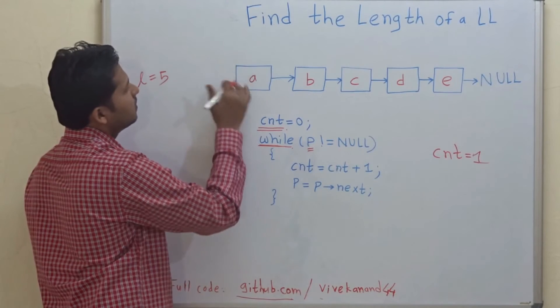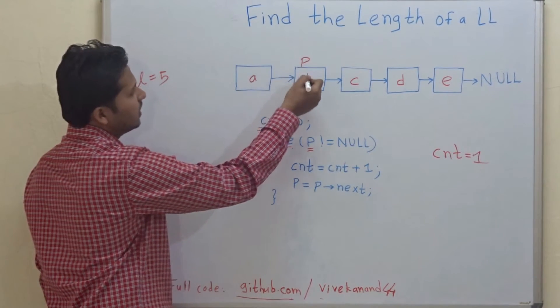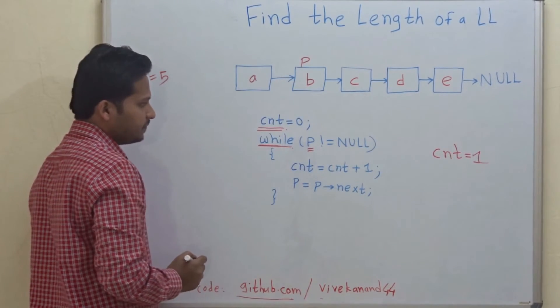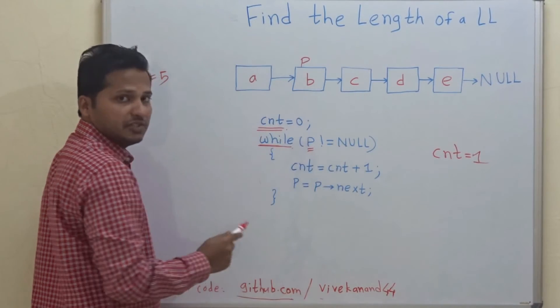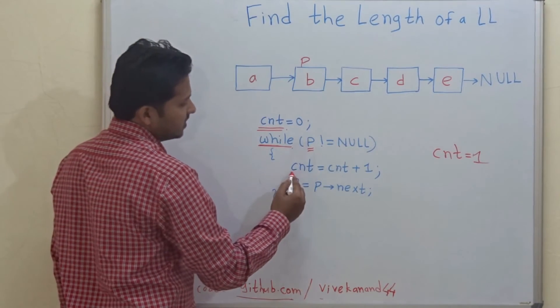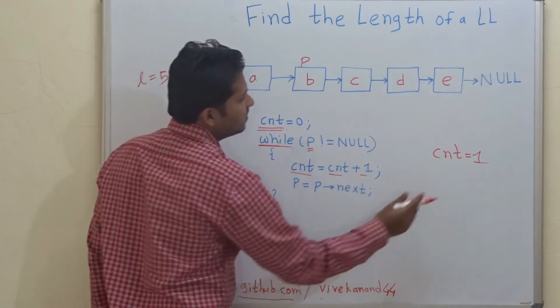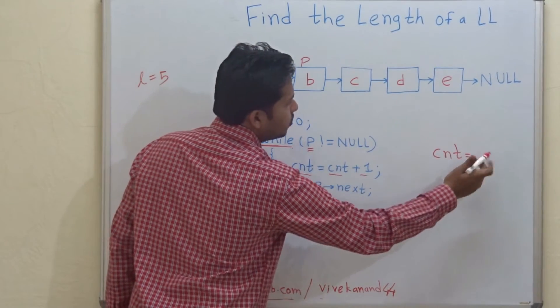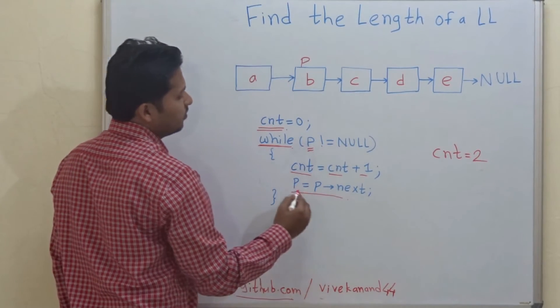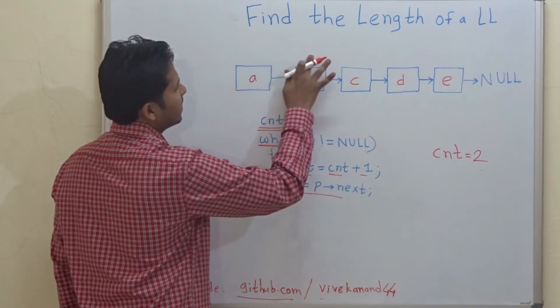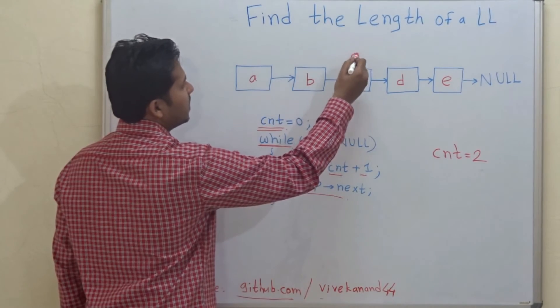p will now point to the next node, that is b. Again, while p is not equal to null—yes, p is not null—cnt will be incremented by one. It will become two now and we will move to the next node. p equals p.next. Let's move to the next node.